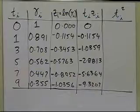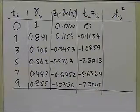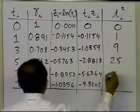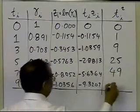And then the last column is simply the square of the t values, which I need for the summation. So that will be 0, 1, 9, 25, 49, and 81.